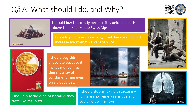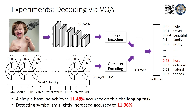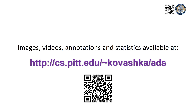For example, according to the purple ad, the viewer should buy this candy because it's unique and better than all others. According to the blue ad, the viewer should stop smoking because it destroys his lungs. A simple baseline achieves 11.5% accuracy on this challenging task. We also show some initial results on how capturing symbolism in images can improve the results. Our dataset and annotations are all available on this link. Thank you for your attention.